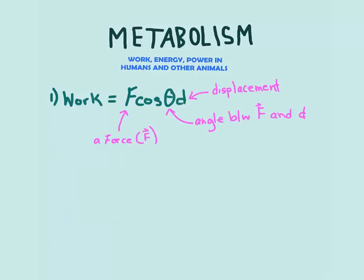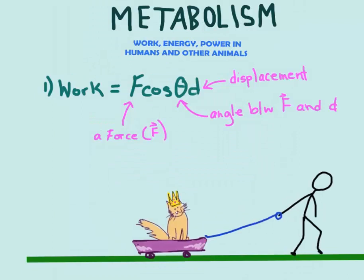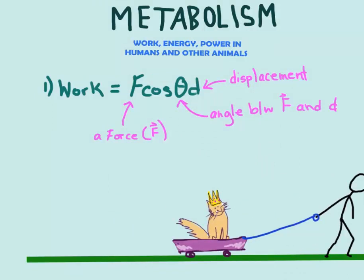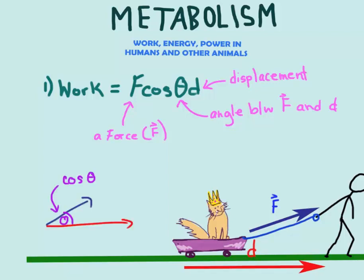Work is force times displacement times the cosine of the angle between them. Suppose you're dragging a wagon across a horizontal surface. Because you're exerting a force in the same direction as your displacement, you're doing work. So we have F, the displacement, and the angle between them — cosine of angle.